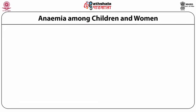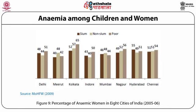We can also observe anemia among women in selected cities in Figure 9. Kolkata has the highest proportion of anemic women among the poor, followed by Nagpur and then Chennai, while Meerut has the lowest proportion. In Kolkata, the incidence of anemia is also the highest among women living in slums as well as non-slum areas. In the poorest quintile, a higher proportion of women with any kind of anemia belongs to Kolkata, while for men it belongs to Delhi.